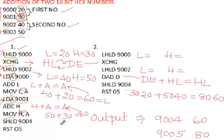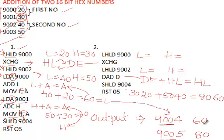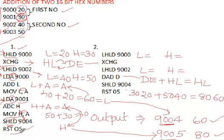We use MOV H, A to move the higher byte result 80 into the H register. So H holds 80 and L holds 60. We store both HL register values into the result locations 9004 and 9005 using the SHLD instruction — L register value 60 goes to 9004 and H register value 80 goes to 9005. The program is halted using RST 5. This completes the normal addition method.